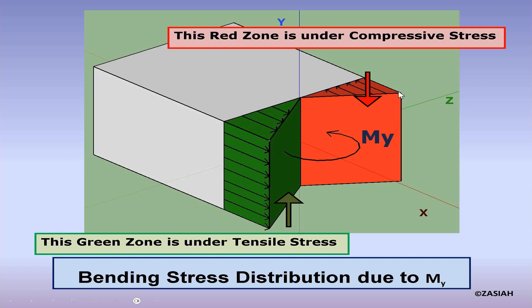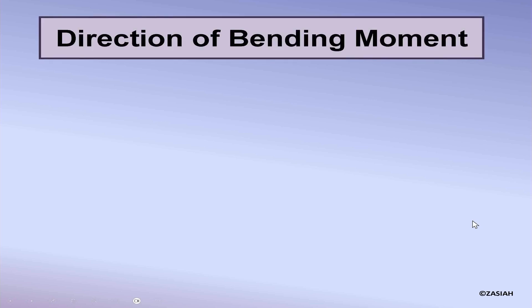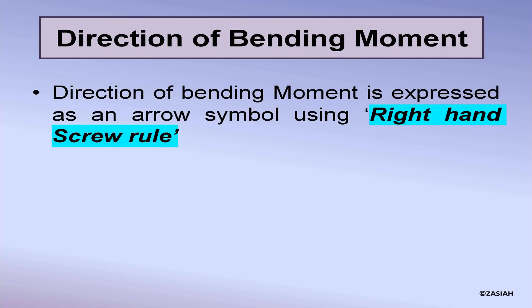The maximum compressive stress occurs at the right edge of the plane and the maximum tensile stress occurs at the left edge of the plane, as shown in this figure. Both My and Mz represent symmetric bending. To determine the direction of the bending moment, we use the right-hand screw rule.